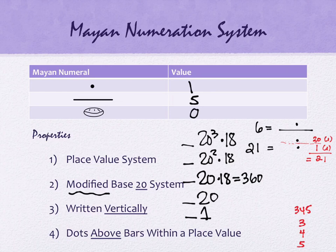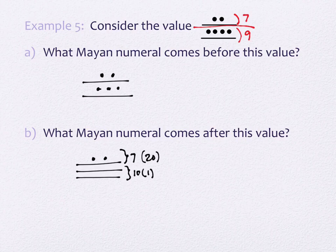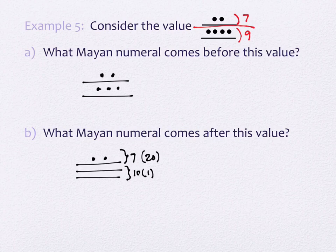Their third place value, instead of being 20 squared, is actually 20 times 18, and then powers of 20 go up from there. We've done this one example where we looked at what comes before and what comes after. The number coming before just removed a dot from the bottom, and the number coming after put an extra dot on the bottom, which turned four dots into five dots, which created a line. Does that sound like what we remember?